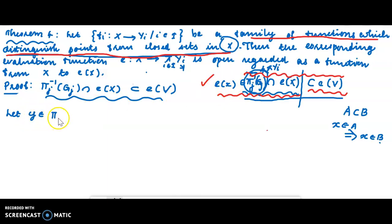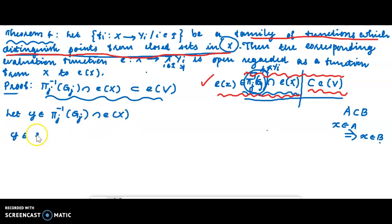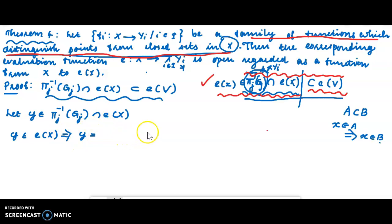The first set is Y inverse of G_j intersection E, and the second set is Y inverse of G_j intersection E of X, intersection E of X. The element of pi_j inverse of G_j: Y is a subset of G_j, Y is a subset of Y, and the element of E of X. Y is a subset of X, intersection E of X.